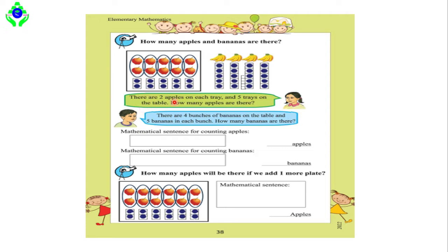Now if we count the bananas: one, two, three, four, five — there are five bananas in each column. Similarly, each column also has five bananas. If we count the columns: one, two, three, four — there are four columns, and each column has five bananas. So five into four is equal to what? That will be the answer to this question.